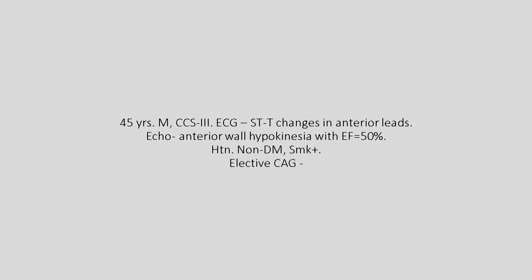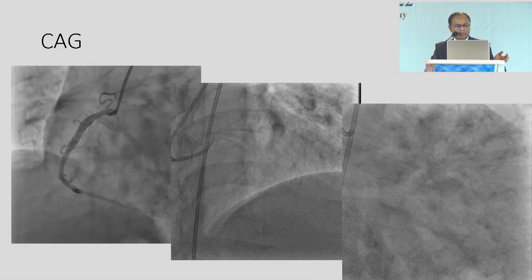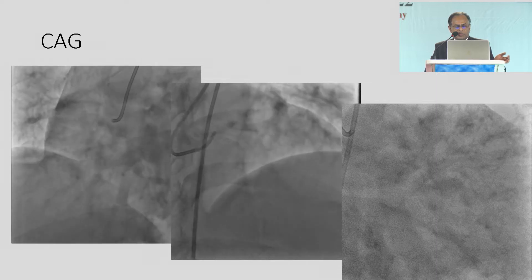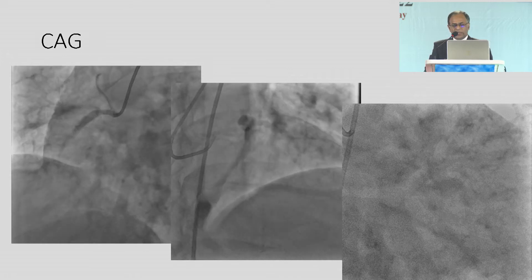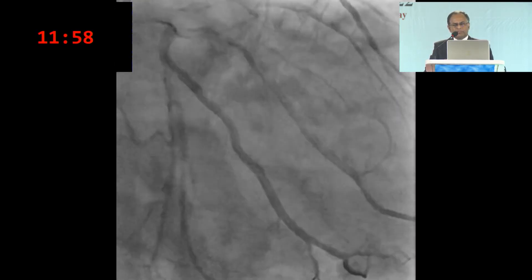This was a 45-year-old man having recurrent episodes of unstable angina. There was ST-T change on the anterior leads, anterior hypokinesia on echocardiogram, ejection fraction around 50%. He was a smoker and hypertensive. Elective angiogram showed a lesion in the mid-LAD and the patient was very much symptomatic.